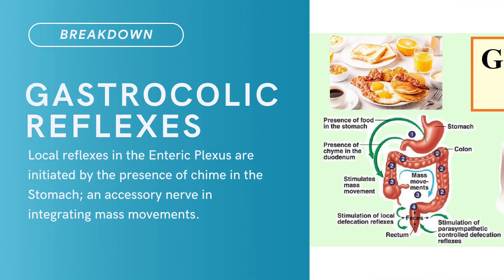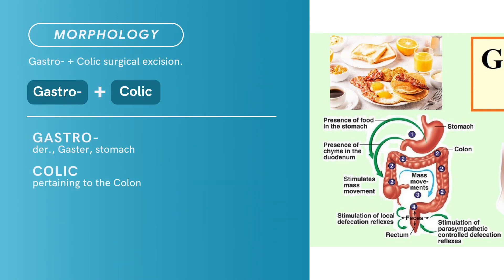Brief definition: local reflexes in the enteric plexus are initiated by the presence of chyme in the stomach, with an accessory nerve integrating mass movements. Term morphology: compound of gastro plus colic.